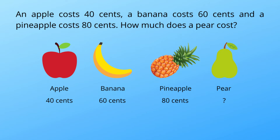Okay, I'm going to reveal the answer. This problem is tricky and you have to think very carefully. We have to find the cost of a pear, so we have to know any interconnection between the costs of these fruits. The only hint we have is the names of the fruits, so let's think about the names.